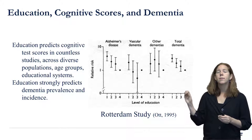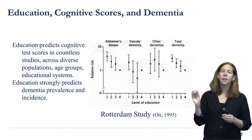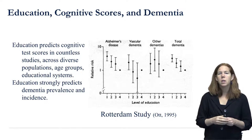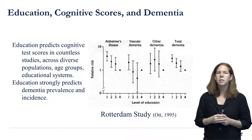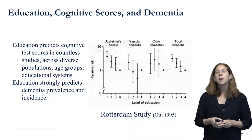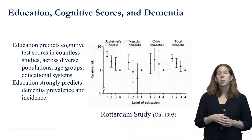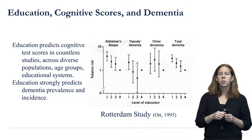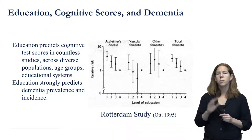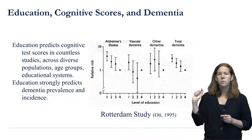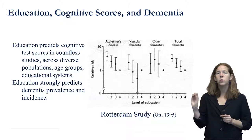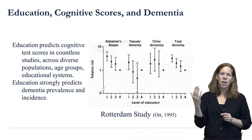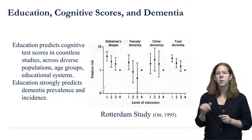You see similar patterns where people with more education are protected from cognitive aging and dementia risk compared to people with less education. This is an image from the Rotterdam Study — an important cohort in the Netherlands that followed older adults living in Rotterdam. They showed for different types of dementia a very similar pattern: looking at total dementia, there's a very clear gradient where people with the lowest levels of education have the highest risk of total dementia, and people with the highest levels of education have the lowest risk. That's true for Alzheimer's disease and also for vascular dementia.